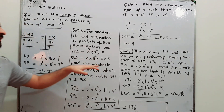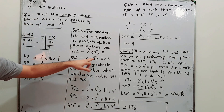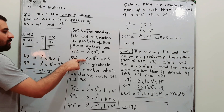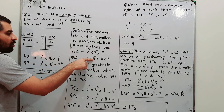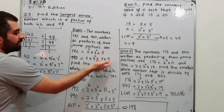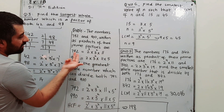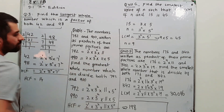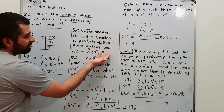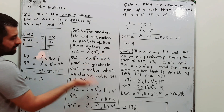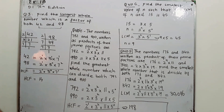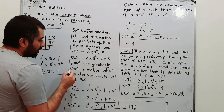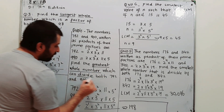792 = 2³ × 3² × 11, while 990 = 2 × 3² × 11 × 5. I have written 2 in the column of 2, 3 in the column of 3, 11 in the column of 11. For 5: we don't have 5 in the factors of 792, so we write 5⁰ to complete the column. We need to find the greatest whole number which can divide both 792 and 990.